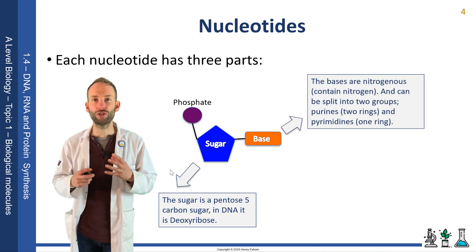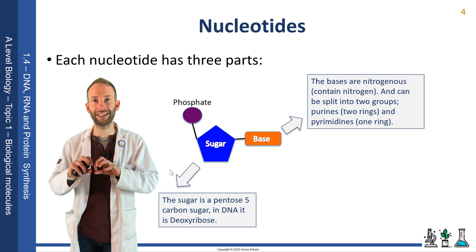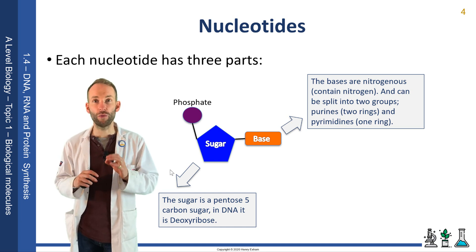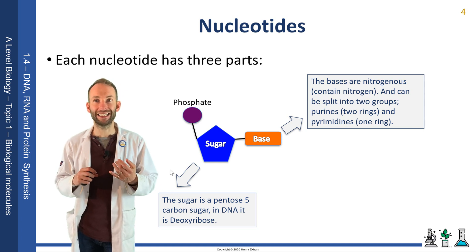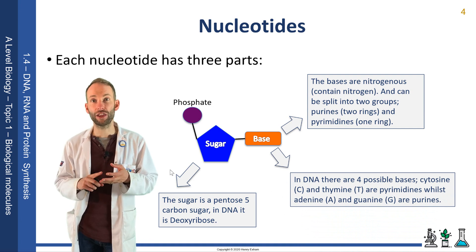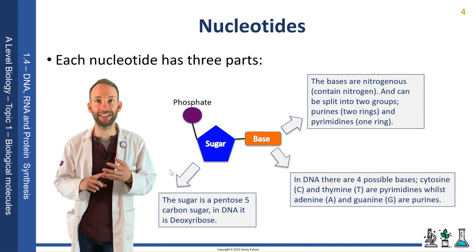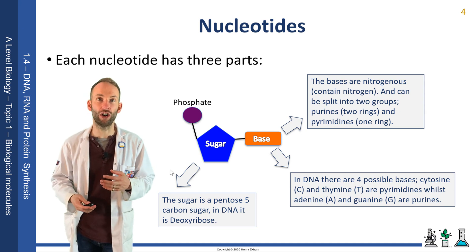There are two groups of bases you get in DNA. You get purines, which have two rings to their structure, and you get pyrimidines, which have one ring in their structure. In DNA there are four bases: adenine, thymine, guanine, and cytosine. Cytosine and thymine — C and T — are the pyrimidines, whilst adenine and guanine — A and G — are the purines.